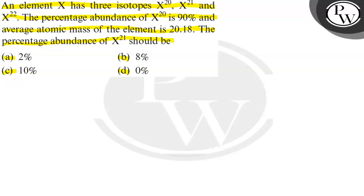Here, X isotopes are three. One is X^20, X^21, and X^22, three isotopes. This percentage is mentioned. It is given in the problem that is 90%.